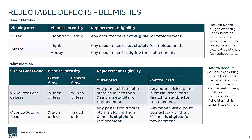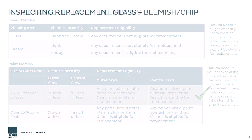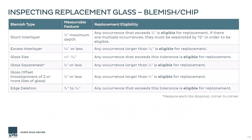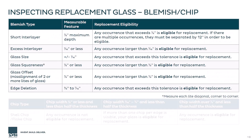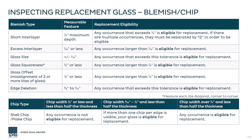However, if the same point blemish were located in the outer viewing area, the window would not warrant replacement because it is still a quality product. As a reminder, be sure when viewing the glass that you do so straight on. Glass viewed at an angle can cause other optical effects that do not warrant replacement.